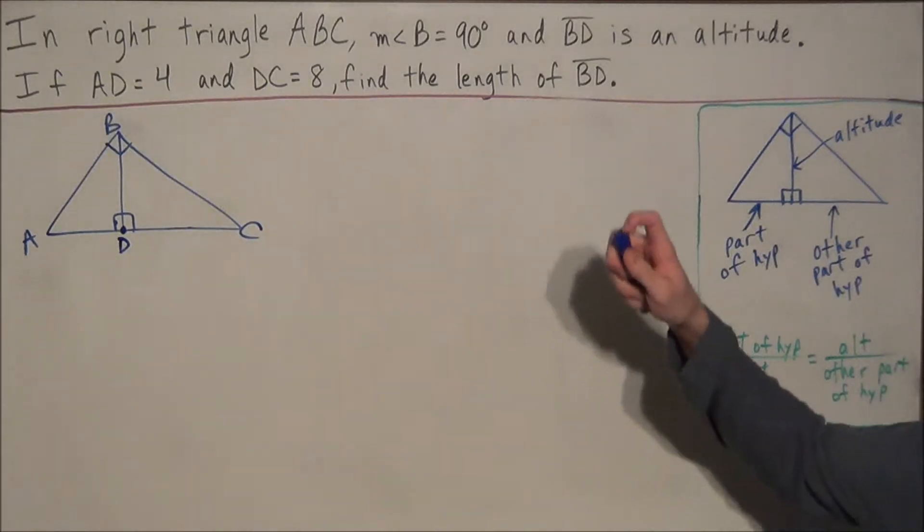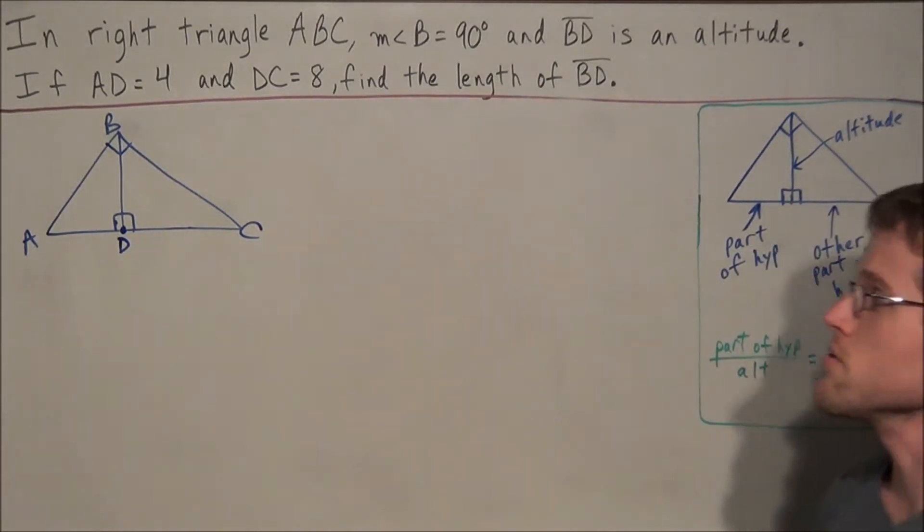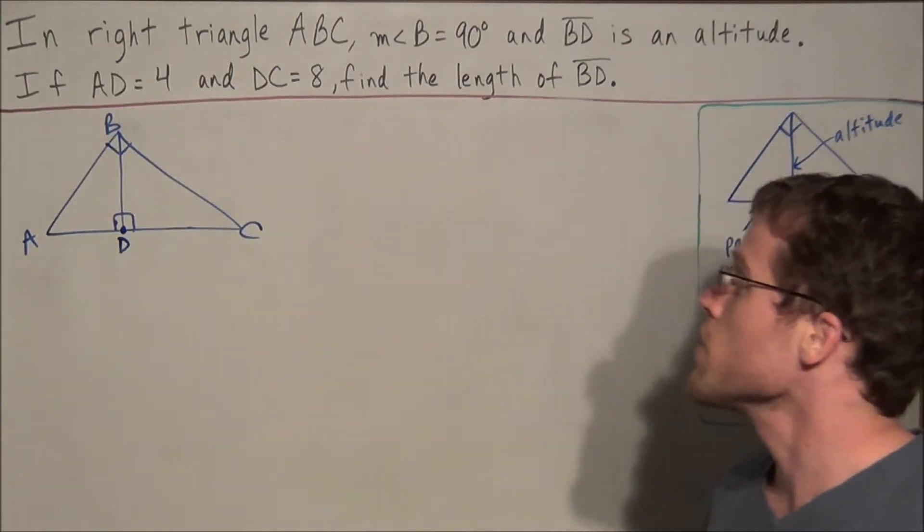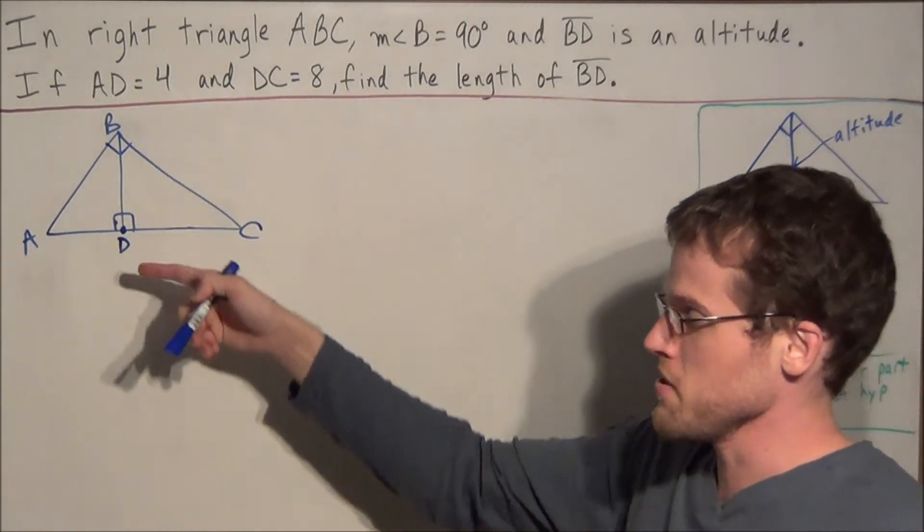So we have in right triangle ABC, the measure of angle B is 90 degrees and BD is an altitude. If AD equals 4 and DC equals 8, we need to find the length of line segment BD.